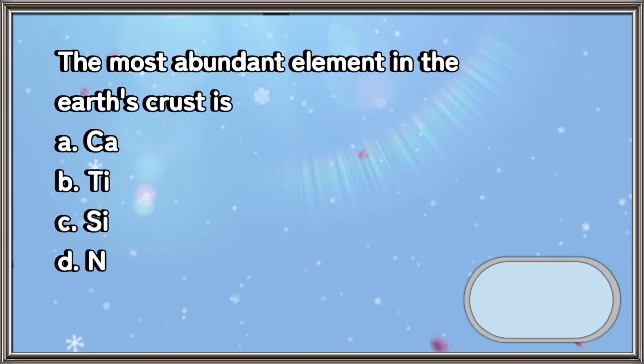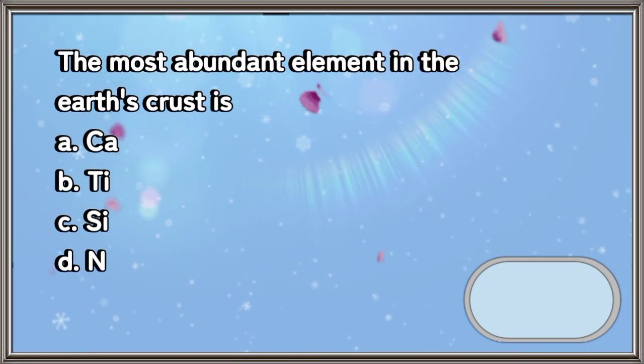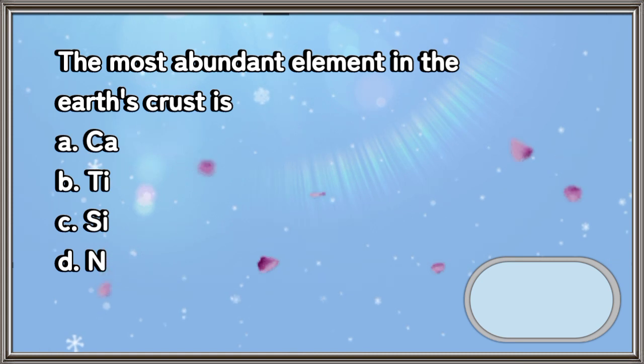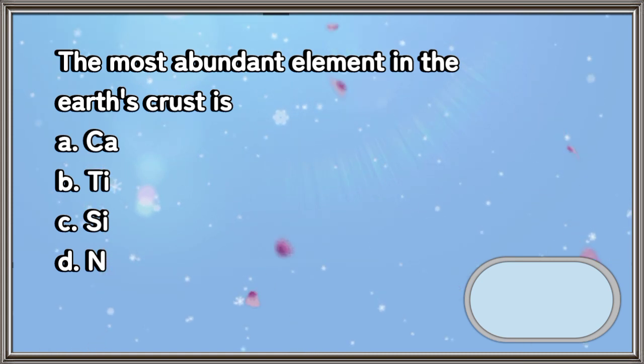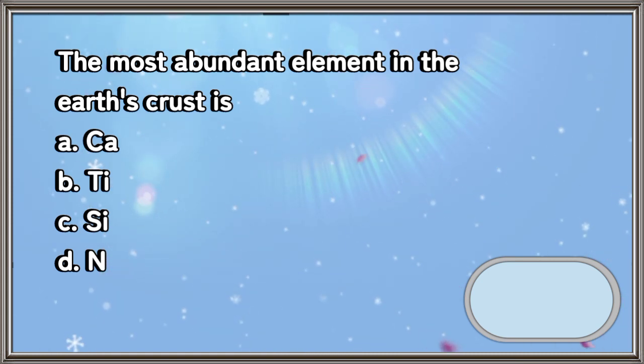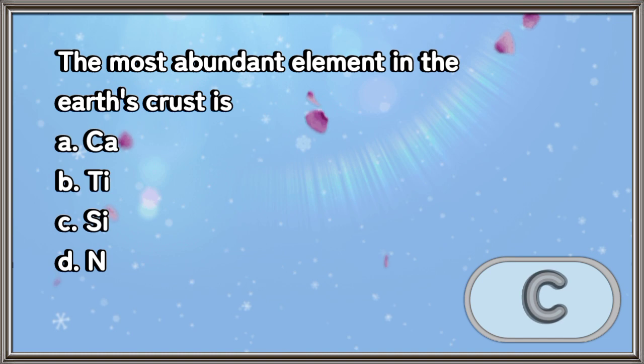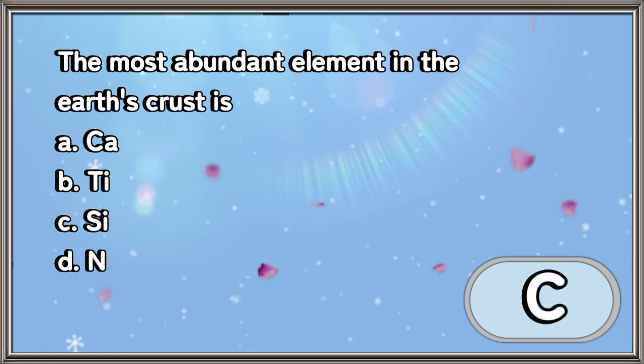The most abundant element in the earth's crust is: A. Calcium, B. Titanium, C. Silicon, D. Nitrogen. The answer is letter C.